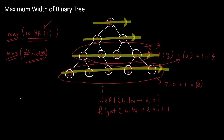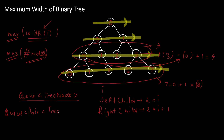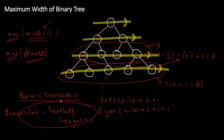In basic BFS or level order traversal we maintain a queue of TreeNode. The only difference here is that instead of a queue of TreeNode, we maintain a queue of pair of TreeNode and integer — because for each node we maintain an index. When iterating over a particular level, we track the first node index and the last node index, then calculate the width using the formula and update the max width if needed.